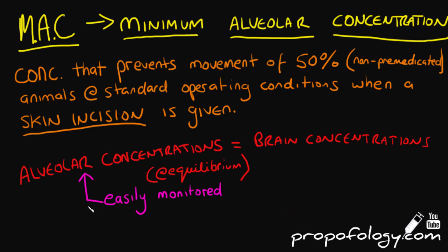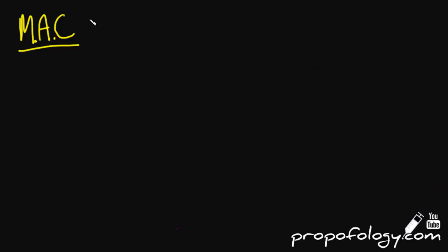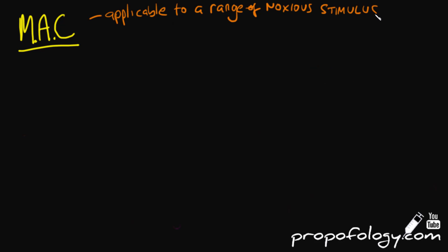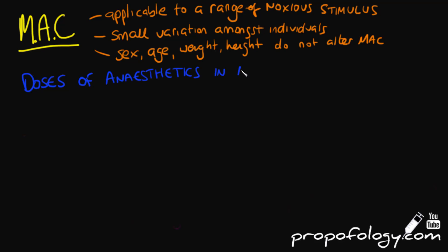We use alveolar concentrations because there is high cerebral blood flow, meaning you get a rapid equilibrium between your alveolar concentration and your brain concentration of the gas. The minimum alveolar concentration won't vary across a variety of noxious stimuli, and individual variability amongst different people is small. Sex, height, weight, and anaesthetic duration do not alter the MAC, making it useful across a wide range of people. The doses of anaesthetics in MACs are also additive.